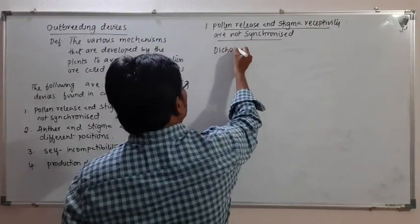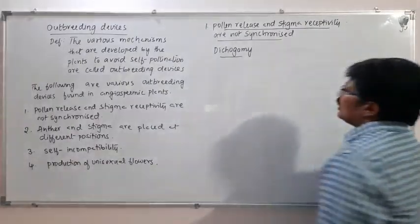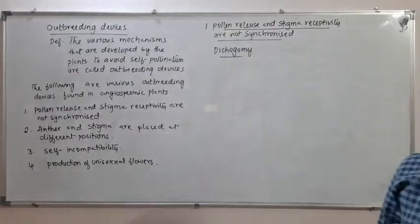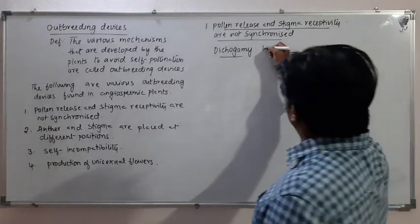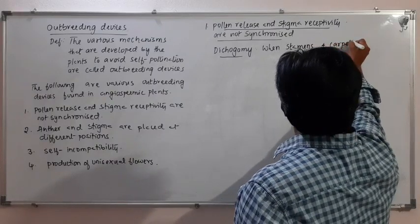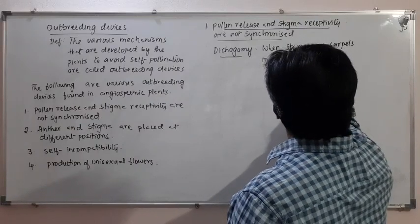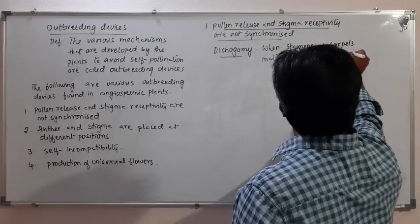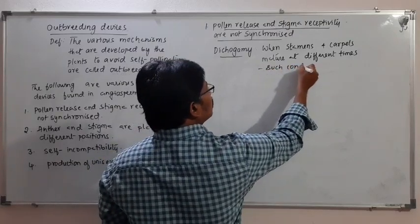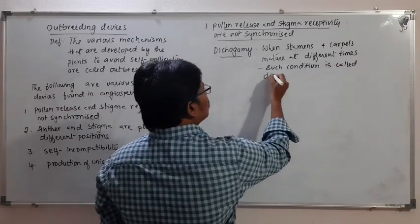Under the first mechanism, we will see a condition called dichogamy. The definition of dichogamy is: when stamens and carpels mature at different times, such a condition is called dichogamy.